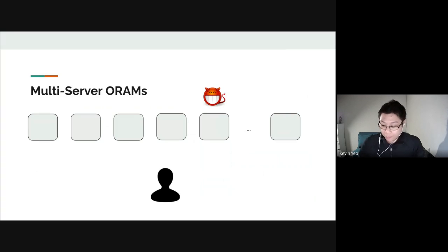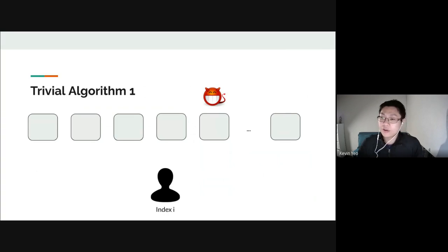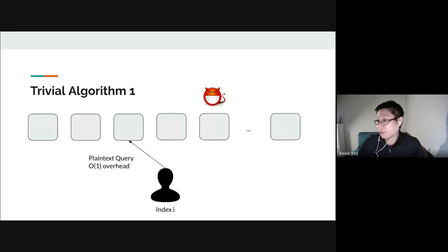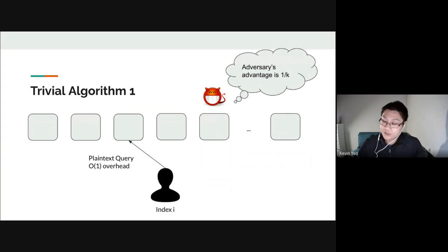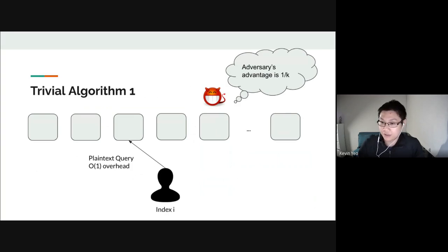Before diving into our results, here are two trivial algorithms for multi-server ORAM. Trivial algorithm one: the user wants to retrieve index i, so it issues a plaintext query to a randomly chosen server, hoping that server isn't compromised. This has O(1) overhead, but the adversary's advantage is 1/K — just the probability that the client chose the compromised server.